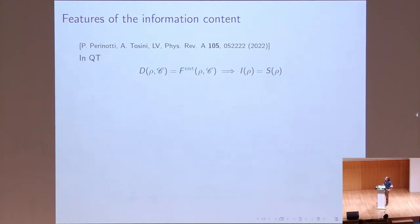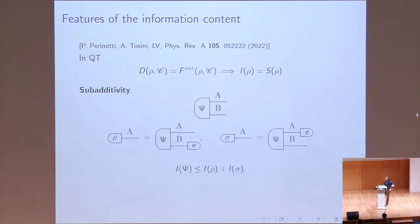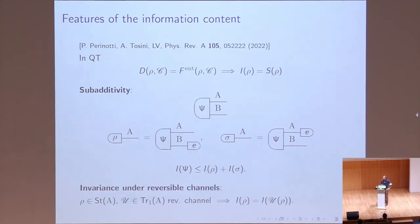We have studied several features of this definition. First, we showed that in quantum theory it reduces to the von Neumann entropy, by showing that the figure of merit we defined collapses to the entanglement fidelity. We also proved that it is sub-additive — namely, the information content of a bipartite system is smaller than or equal to the sum of the information contents of the subsystems. We also showed that it is invariant under reversible operations. Importantly, these properties are derived from the definition of information content as a compression rate; we do not rely on specific mathematical functions to compute it.